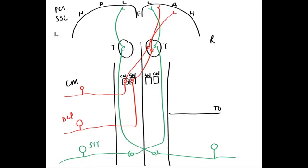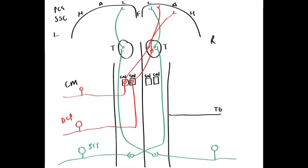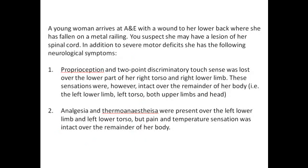Let's see why this is important using a case study. A young woman arrives in A&E with a wound to her lower back where she's fallen on a metal railing. You suspect she may have a lesion of her spinal cord. In addition to severe motor deficits, she has the following neurological symptoms. Proprioception and two-point discriminatory touch sense was lost over the lower part of her right torso and right lower limb, but these sensations were intact over the remainder of her body. Immediately, you should be thinking: proprioception, two-point discriminatory touch — dorsal column pathway. And remember, dorsal columns don't cross at the level of the spinal cord.